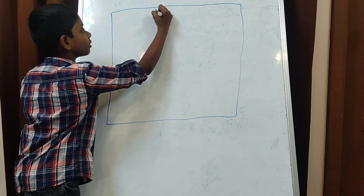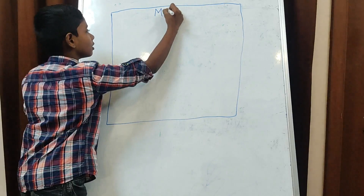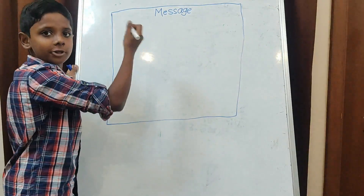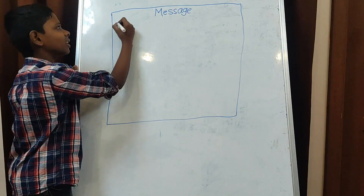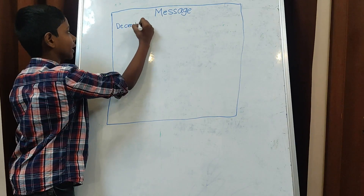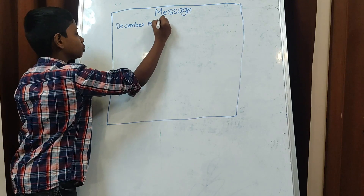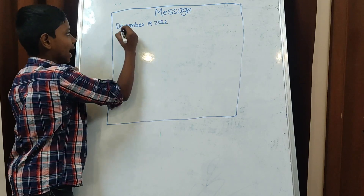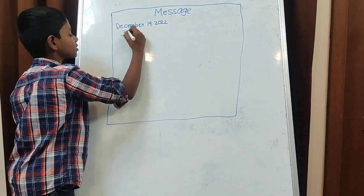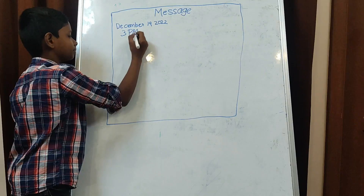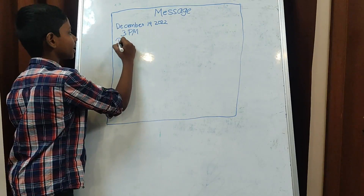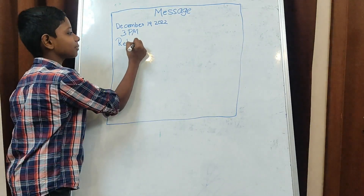On top in the center, we should write 'Message.' Then we should write the date — today's date is December 19, 2022 — and the date should be written in full letters. Then we should write the time; for example, 3 PM. After that, we should write the receiver's name, for example, Rehan.